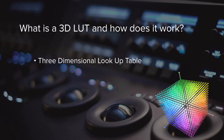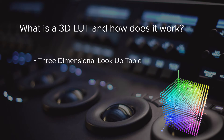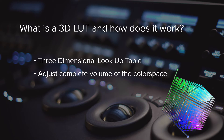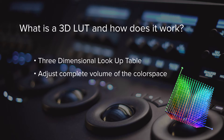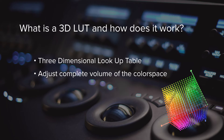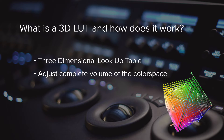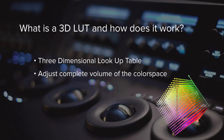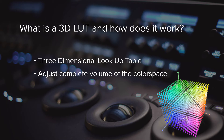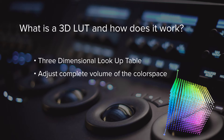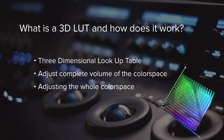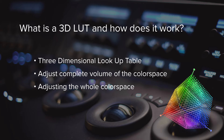A 3D LUT is a three-dimensional lookup table. It's essentially a way to adjust the complete volume of the color space that the display is capable of producing. Instead of just adjusting the two-point white balance or even a multi-point 1D LUT that only corrects grayscale and gamma, we're adjusting the whole color space with thousands of points inside of the volume.